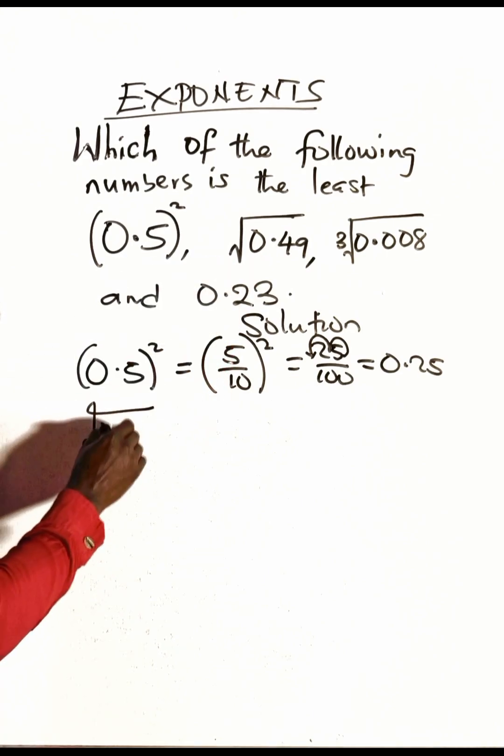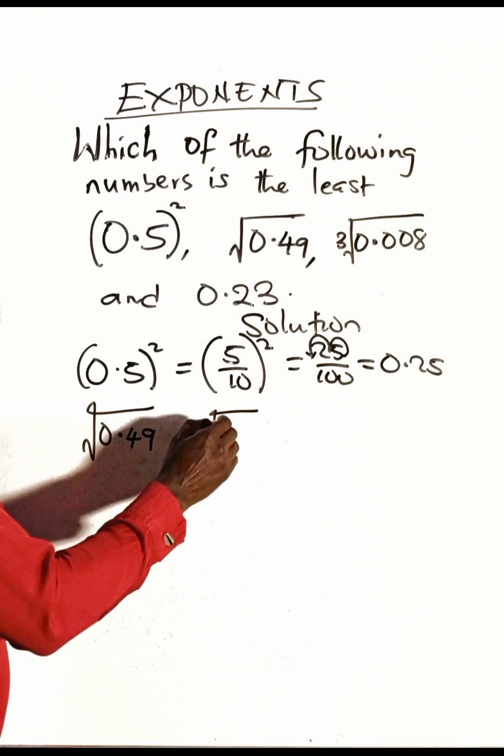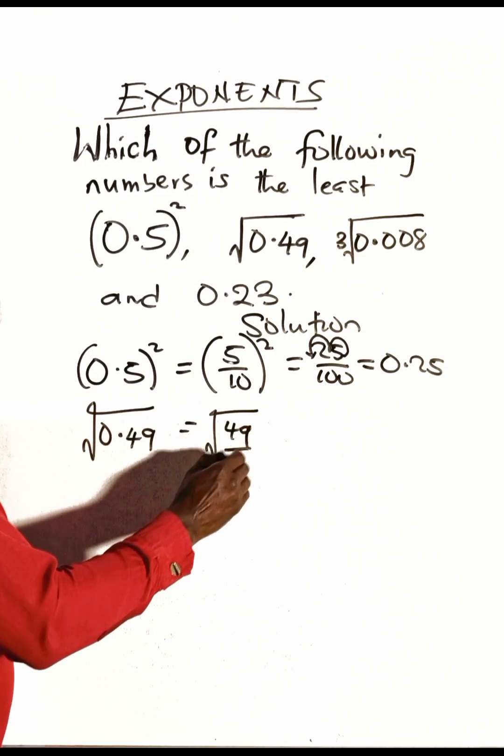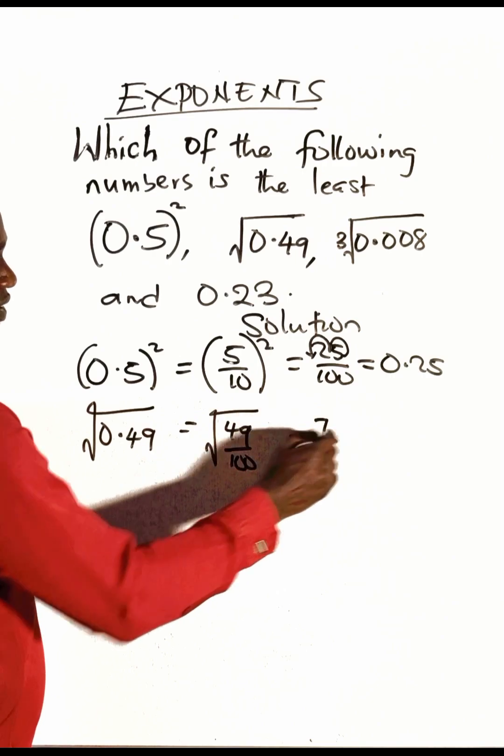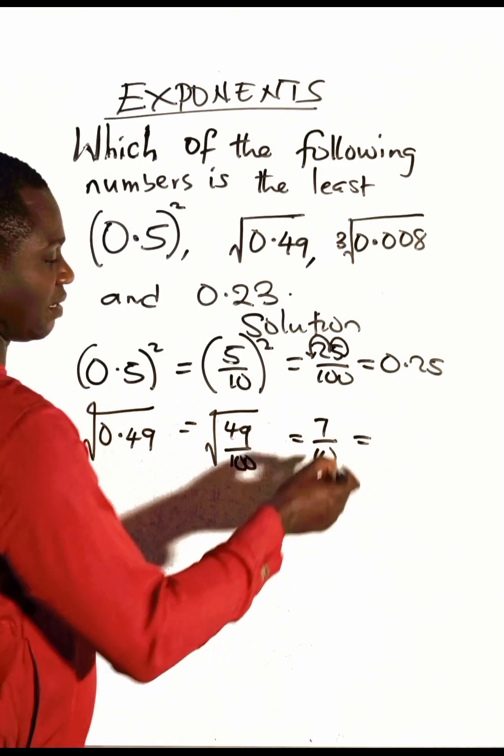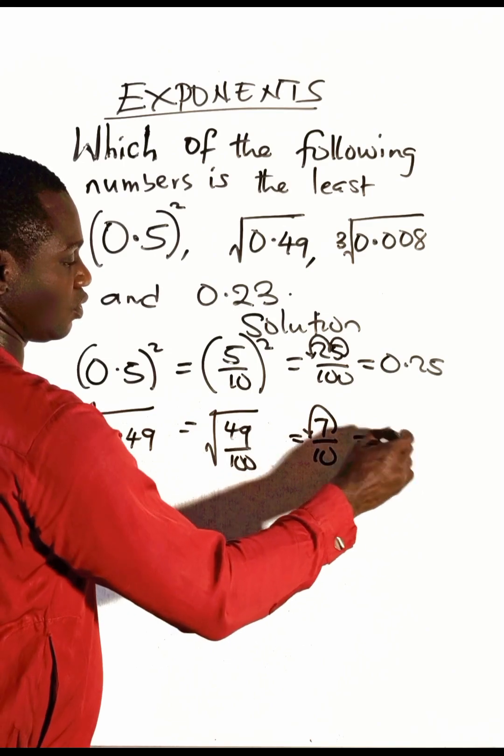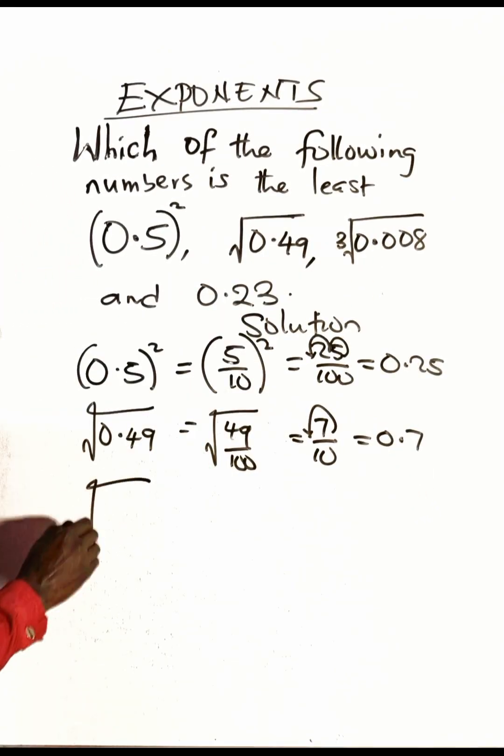Then take a look at the second one, the square root of 0.49. This is also written as the square root of 49 over 100 if you change it to a fraction. The square root of 49 is 7, the square root of 100 is 10. Now changing this back to a decimal gives us 0.7.